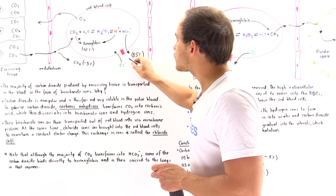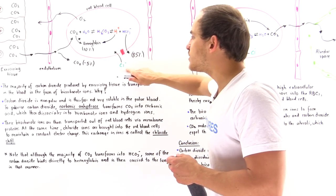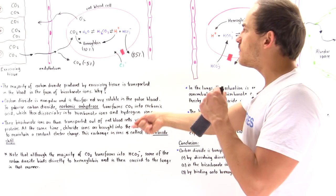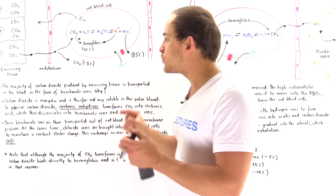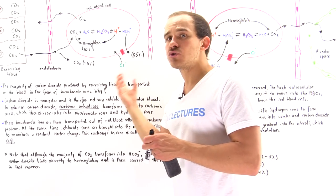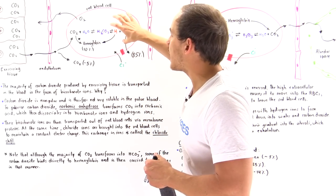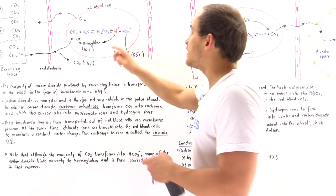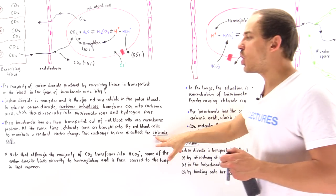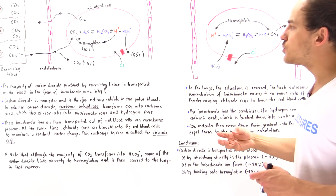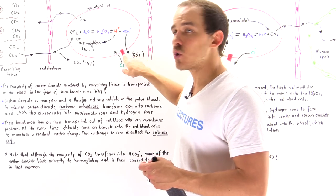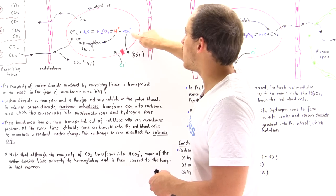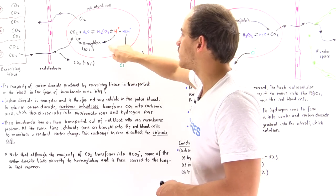At the same time, this transport protein pumps chloride ions into the red blood cell. This exchange ensures there is no change in electrostatic charge between the inside and outside of the red blood cell. This exchange of ions is known as the chloride shift — the process by which the membrane protein balances charges by moving bicarbonate out and chloride in.